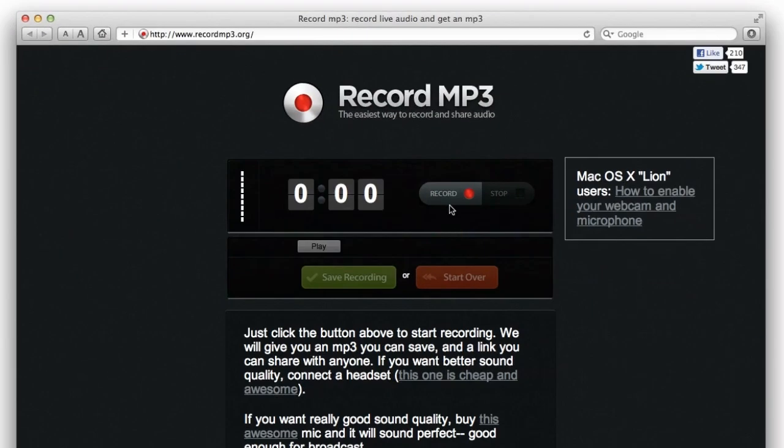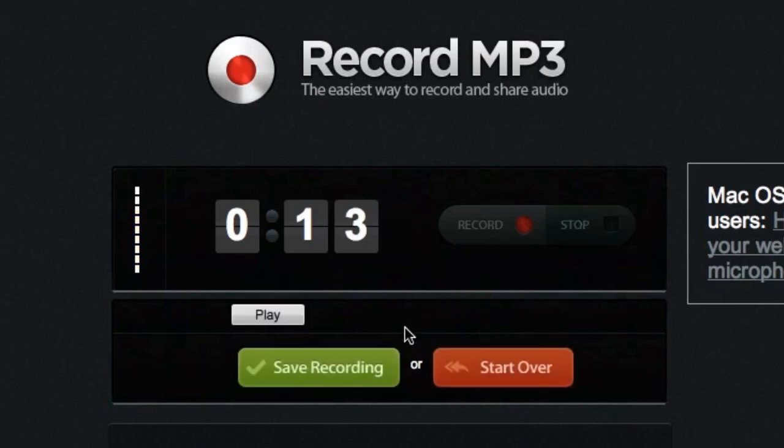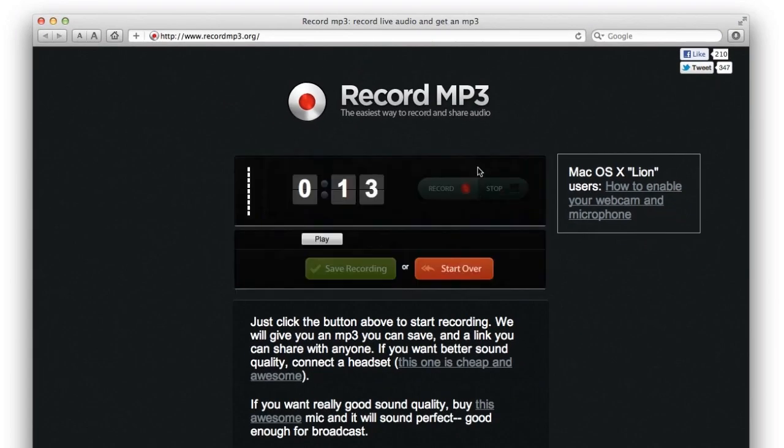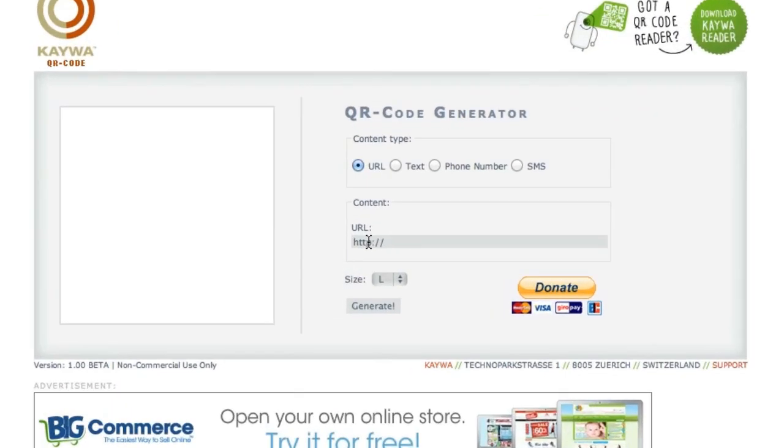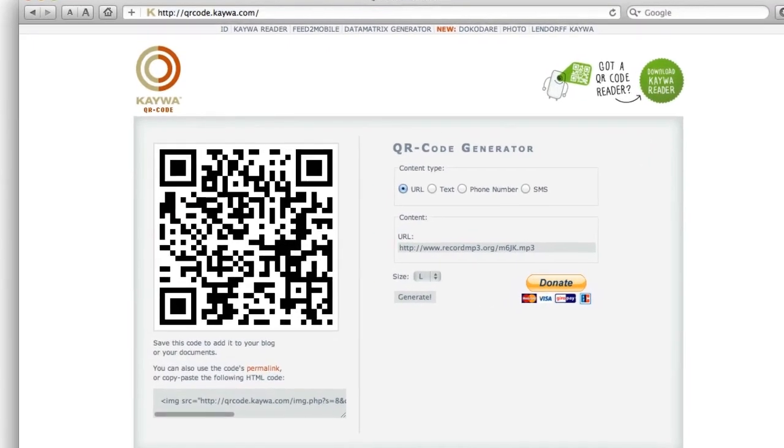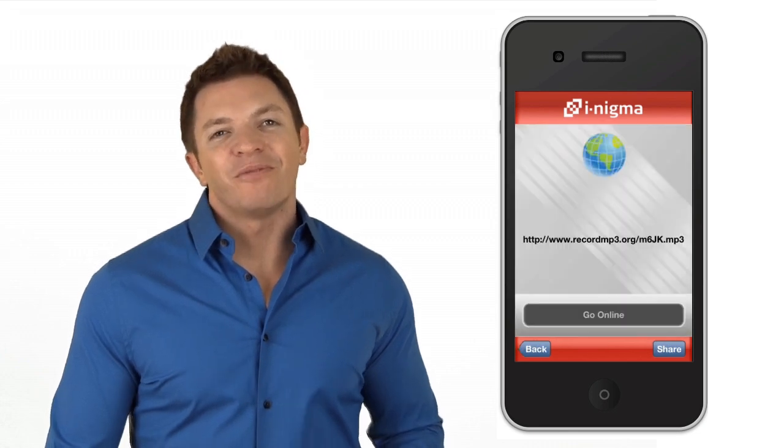RecordMP3.org is an easy way to record and share audio. You simply use your laptop or desktop computer's microphone and record right from the webpage. After recording, RecordMP3.org supplies you with a URL. You can copy and paste that URL into a QR code generator. When the code is scanned, the recorded audio is played in the web browser.